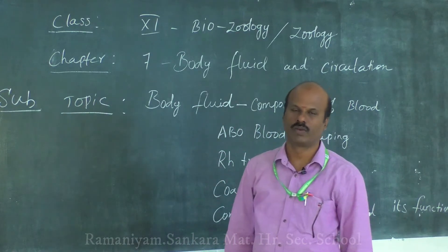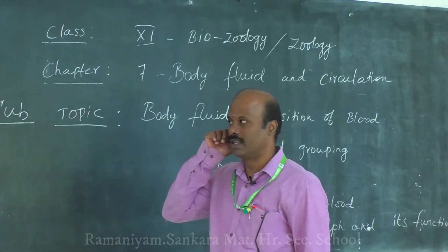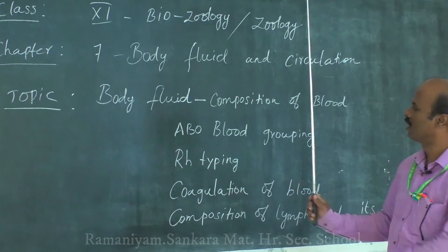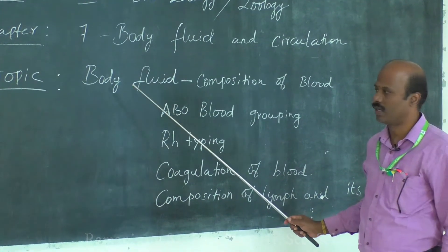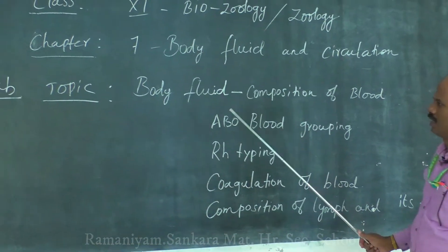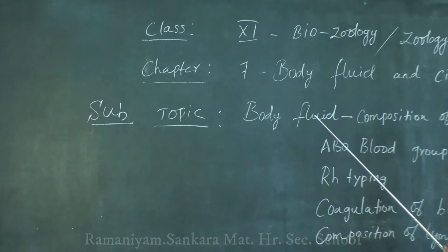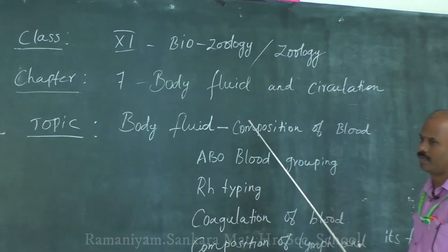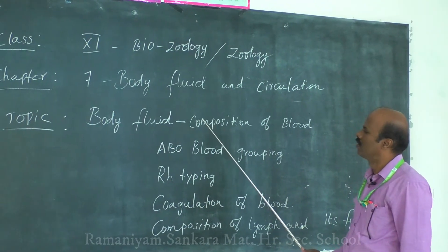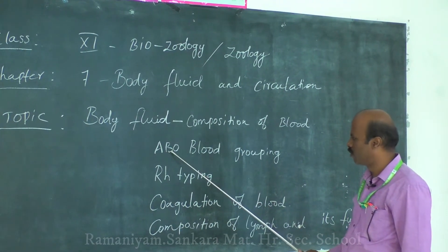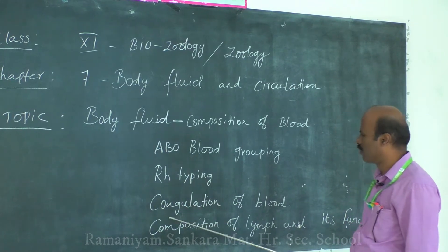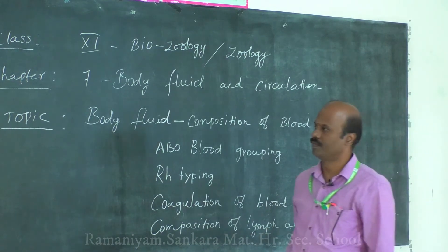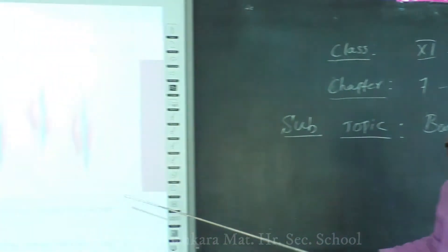Good morning everyone. Today we are going to discuss Chapter 7: Body Fluid and Circulation. Under this chapter, we will discuss body fluids, including the different types of body fluids, composition of blood - covering the liquid and solid parts - ABO blood grouping, RH typing, coagulation of blood, and the composition and functions of lymph.